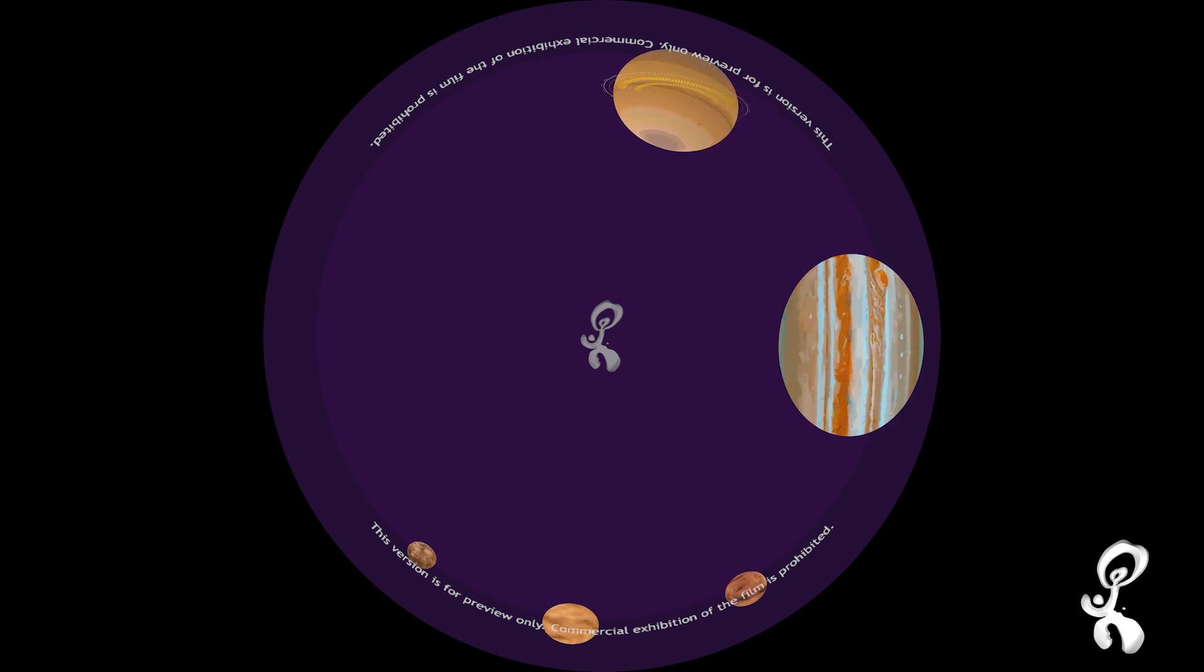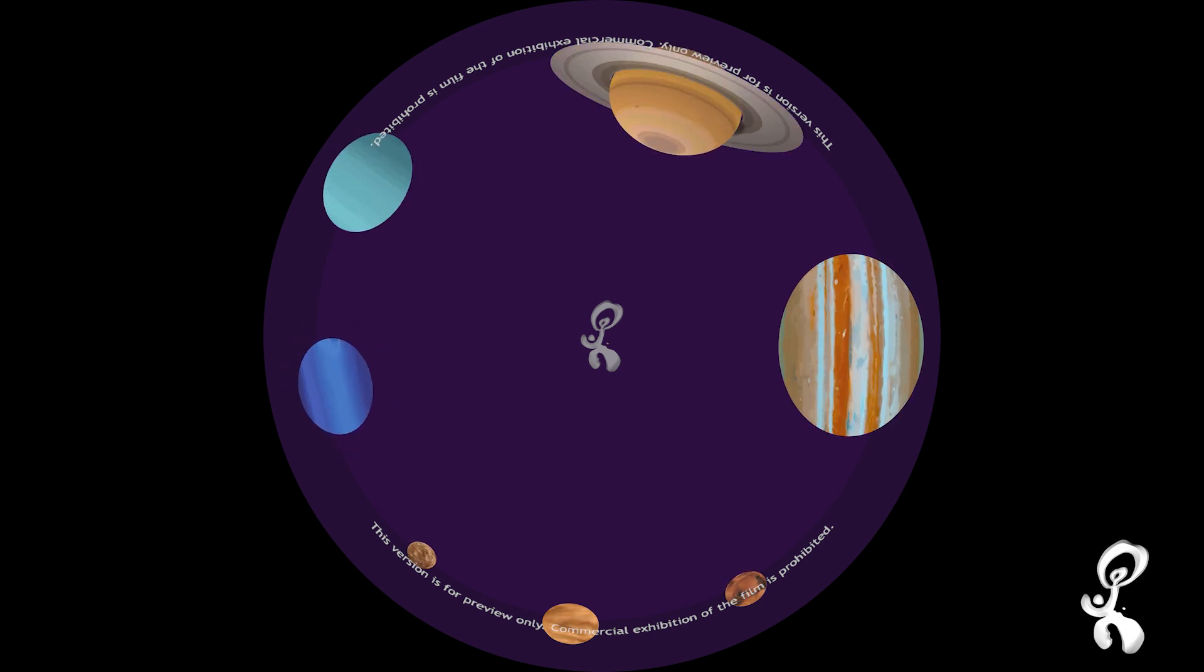Mercury, Venus, Mars, Jupiter, Saturn, Uranus and Neptune. These are our neighbour planets. Our Earth shares the solar system with them.